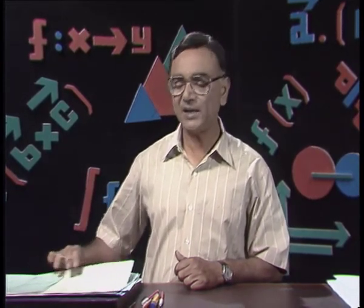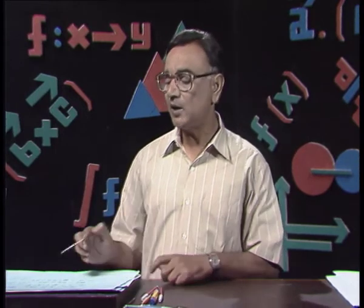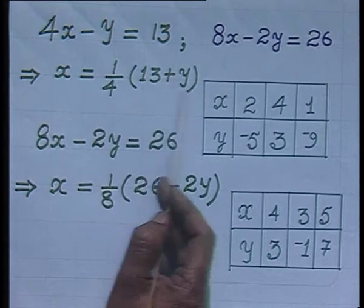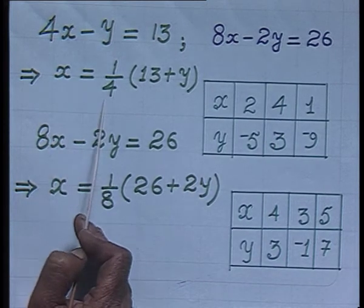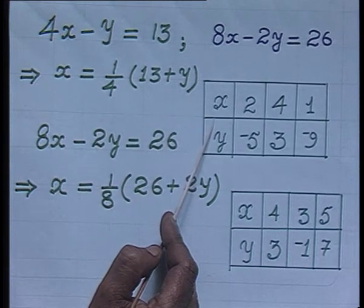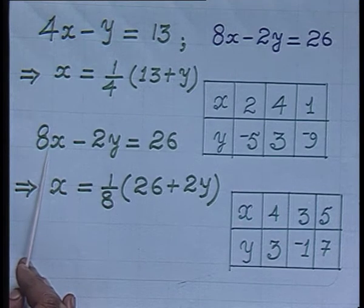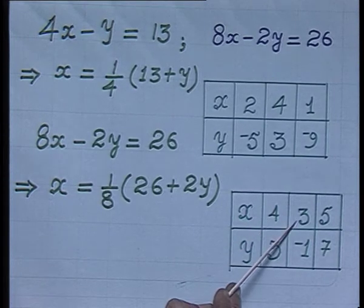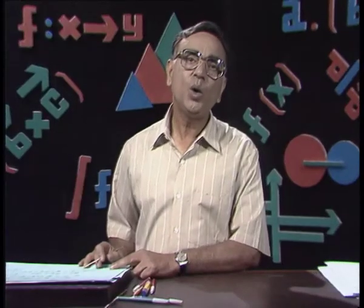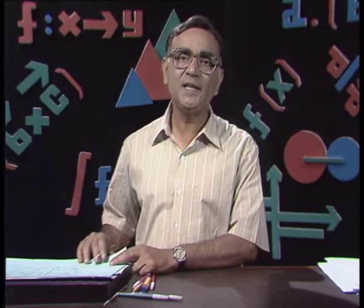Now let us look at another system. The equations are 4x minus y equals 13 and 8x minus 2y equals 26. Transforming the first equation into x gives x equals one-fourth of (13 plus y), with ordered pairs (2, minus 5), (4, 3), and (1, minus 9). For the second equation, x equals one-eighth of (26 plus 2y), giving ordered pairs (4, 3), (3, minus 1), and (5, 7).